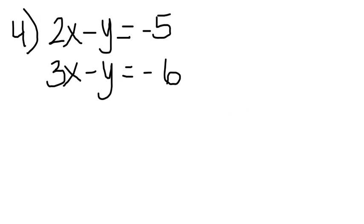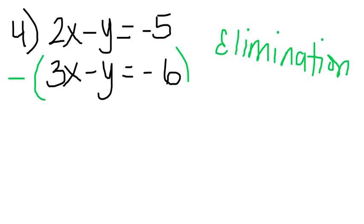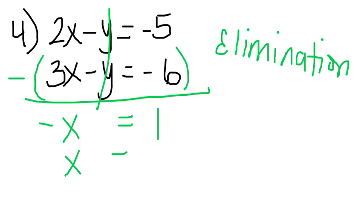For number four, hopefully you can identify that we're going to be solving this system by elimination. And you can eliminate the y's very easily. Since they're the same sign, you want to subtract the second equation. So 2x minus 3x is negative 1x. Negative y minus negative y eliminates, or goes to 0. Negative 5 minus negative 6 is really negative 5 plus 6, which is just 1. If negative x equals positive 1, then x equals negative 1.